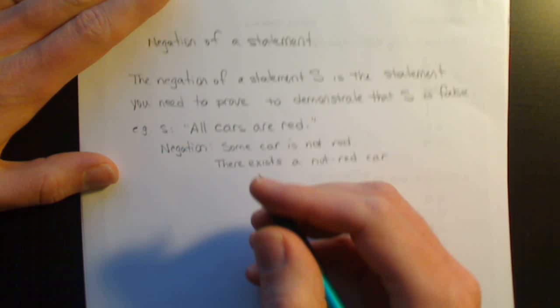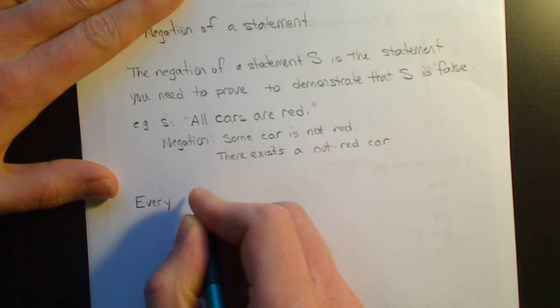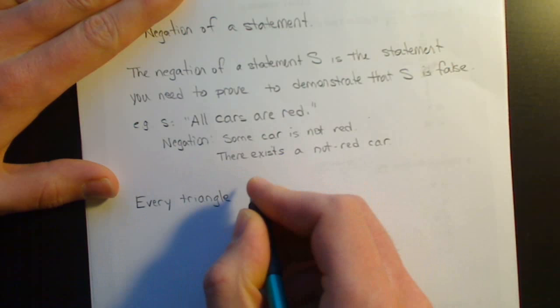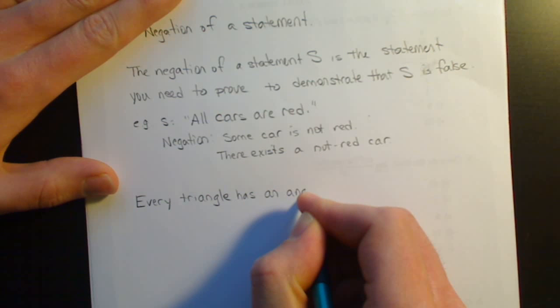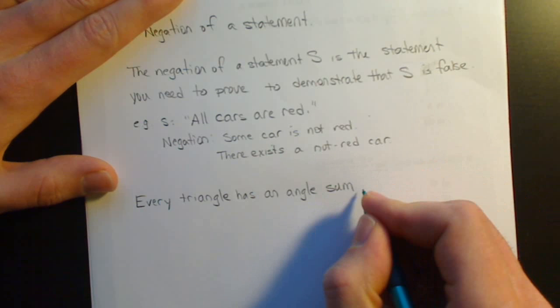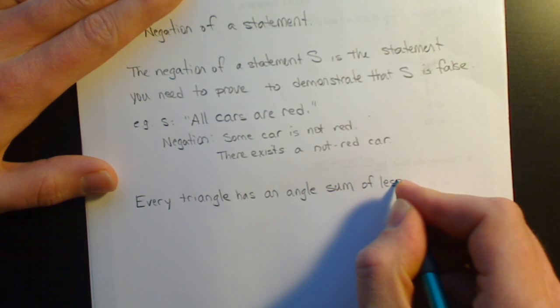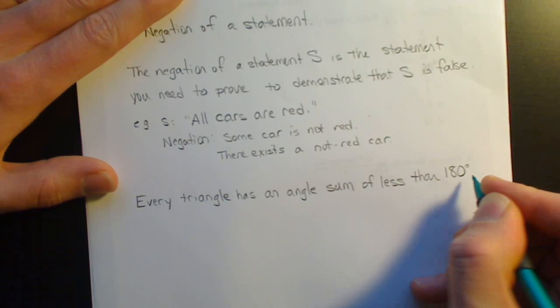So, on your pretest, there is a statement. Every triangle has an angle sum of less than 180 degrees.